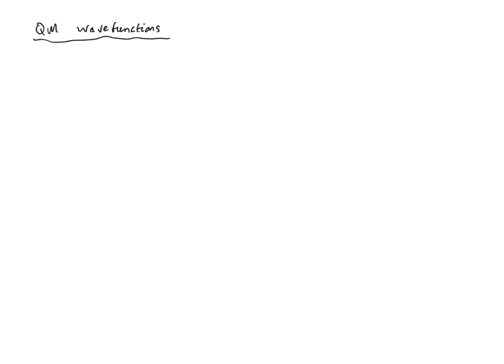What about quantum mechanics? In quantum mechanics, the probability that a particle starting off at point one and ending up at point two by some particular path is again the square of a probability amplitude. More precisely, it's the square modulus of a probability amplitude A. But in quantum mechanics, this amplitude is a complex number related to the wave function. Then we take the square modulus, which is a real number. But what about multiple paths? The total amplitude is then the sum of amplitudes for each possible path for the particle starting off at one and ending up at two.